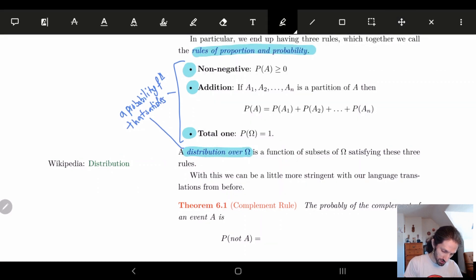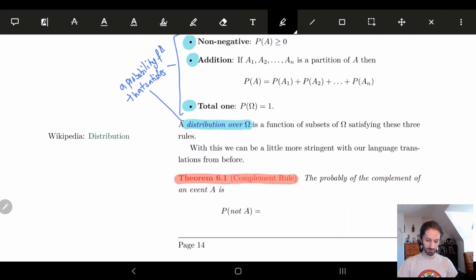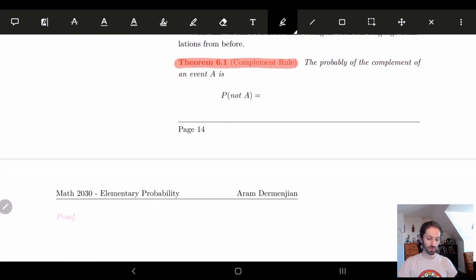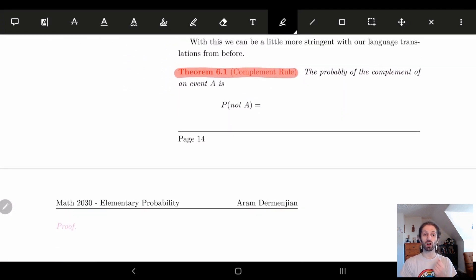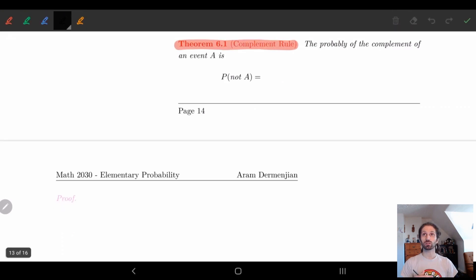So the first theorem that we have is what's called the complement rule. So the complement of an event is basically, I'll scroll up so you can actually see, the probability of the complement of an event. So in other words, what's the chance that something will not occur? So let's see if we can determine this without using our knowledge. So if you think about it, this is just the probability of a complement. This is what we're really asking.